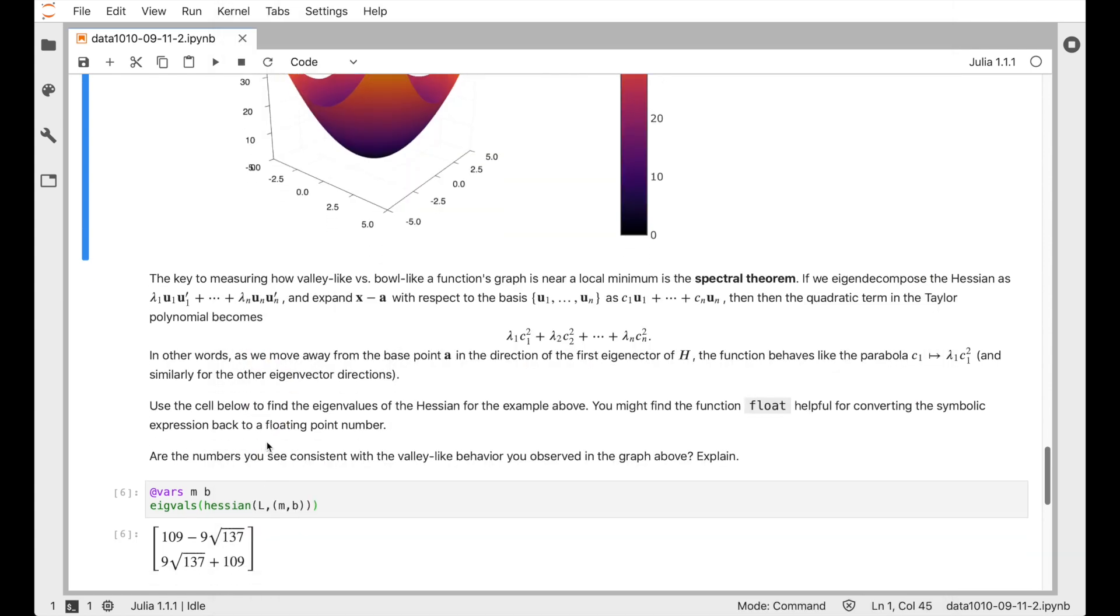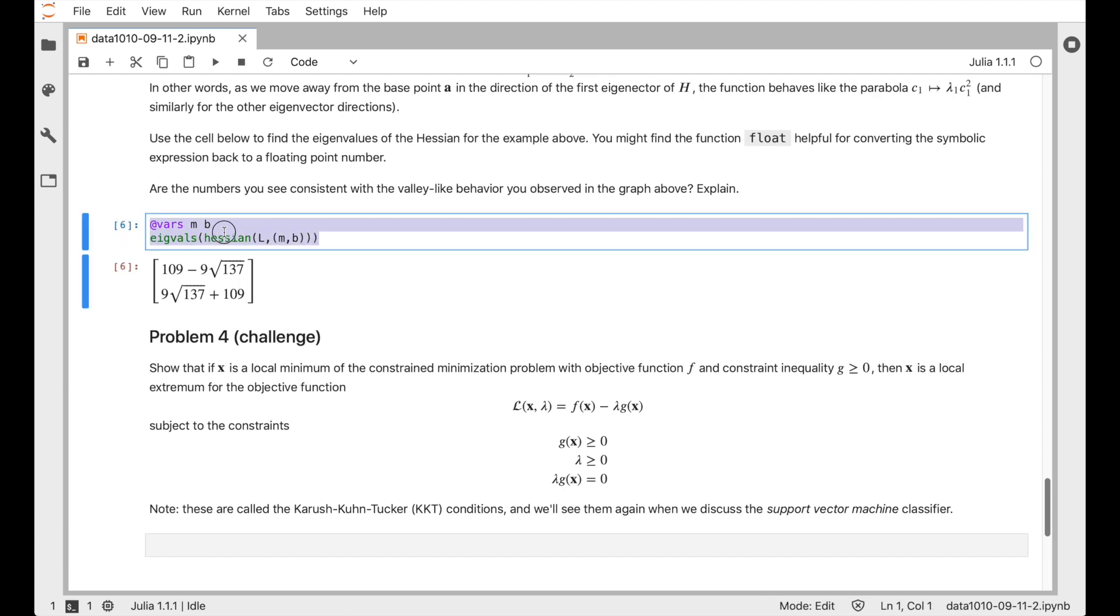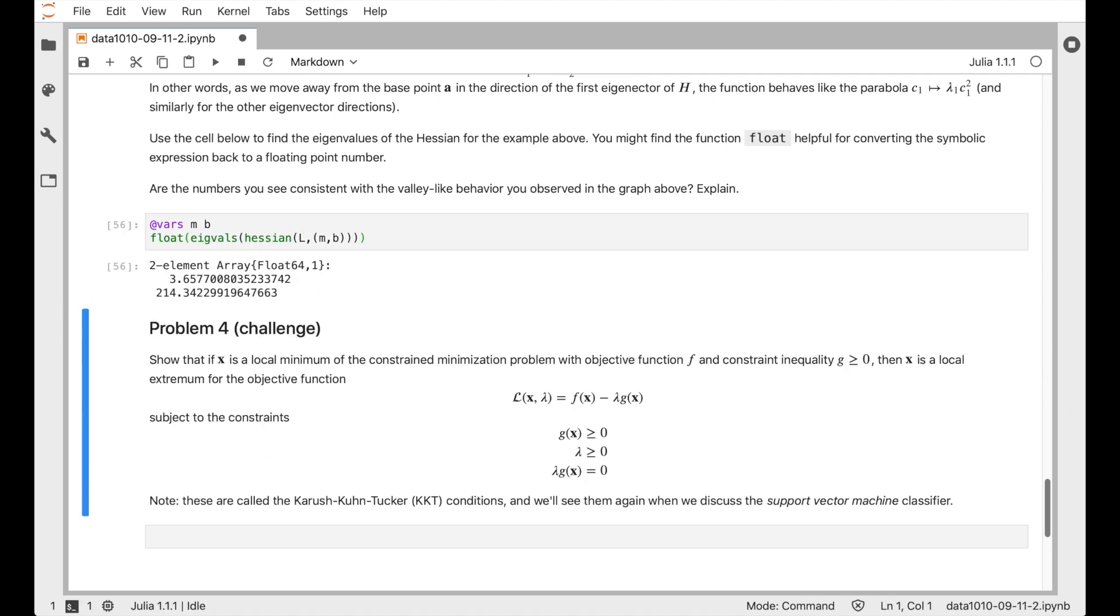So for example, with the problem that we started with, we might look at the Hessian and check its eigenvalues. And we get these radical expressions. So that's SymPy exactly finding the eigenvalues for us. But if we want to compare how big they are, we'd rather just see decimal representations. And sure enough, one of them is over 200 and the other one is less than 4. So there's one direction, namely the direction of the eigenvector corresponding to this larger eigenvalue where the walls are really steep, and then the orthogonal direction where it's much more shallow. So that corresponds to the bottom of that valley.